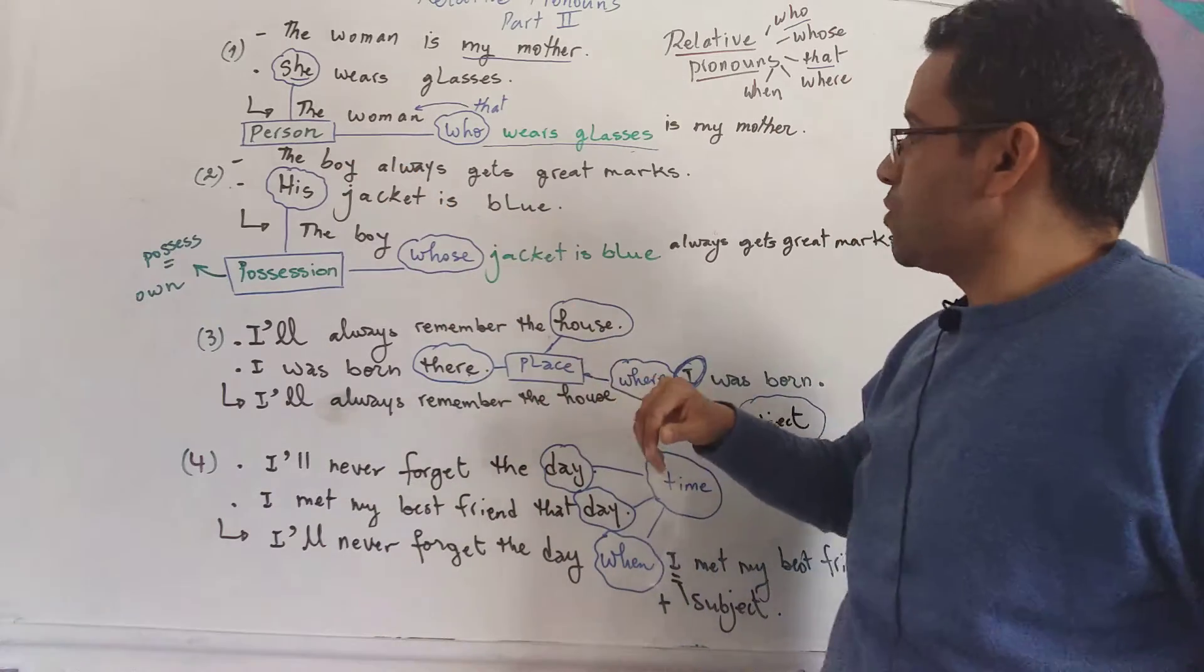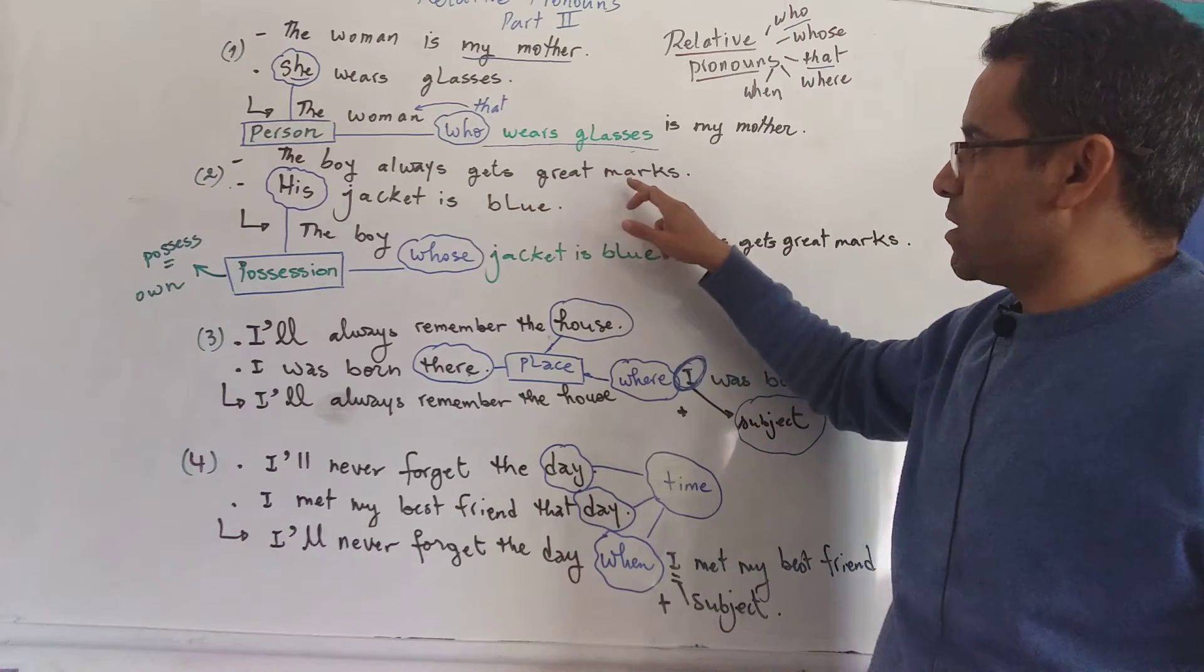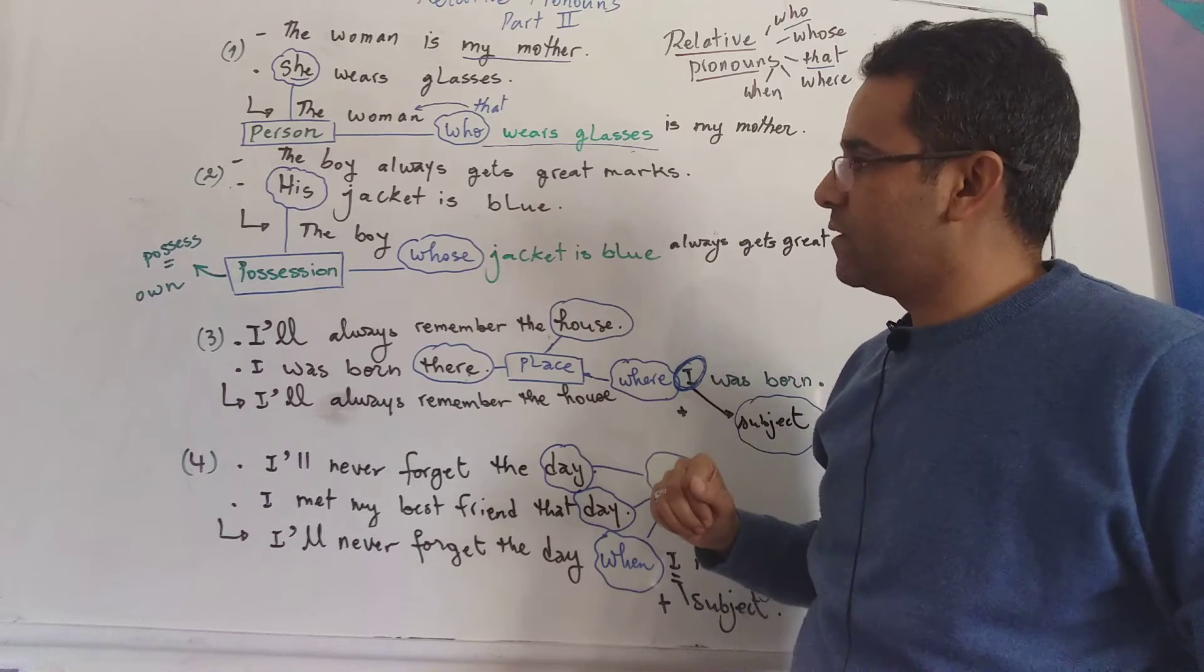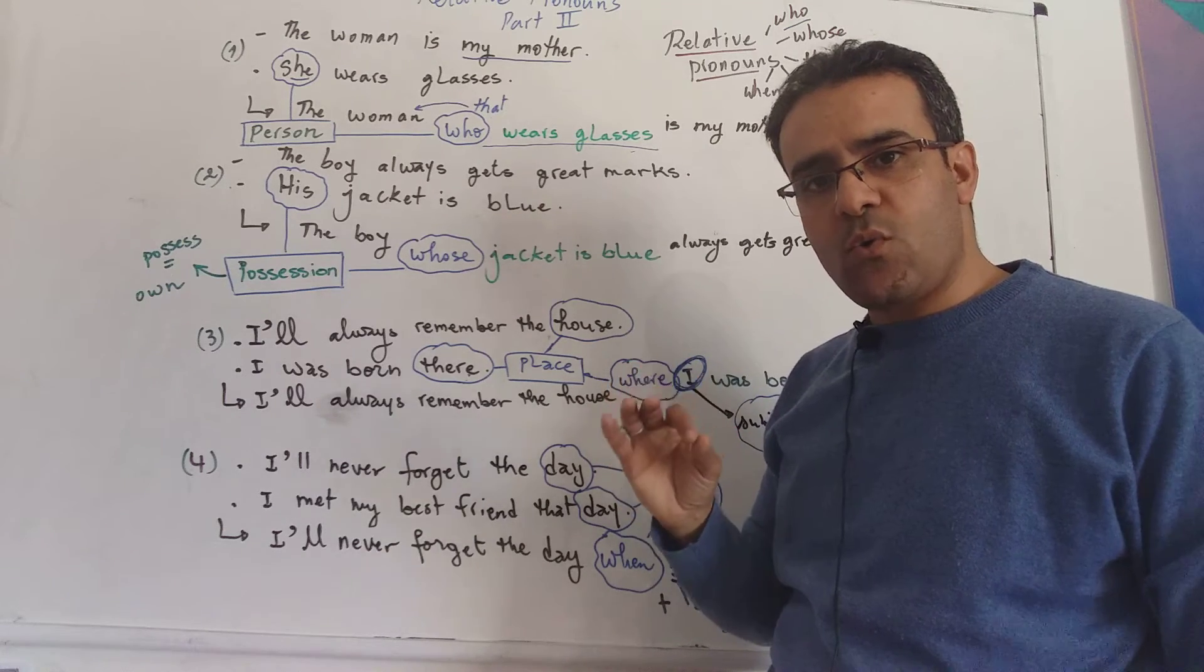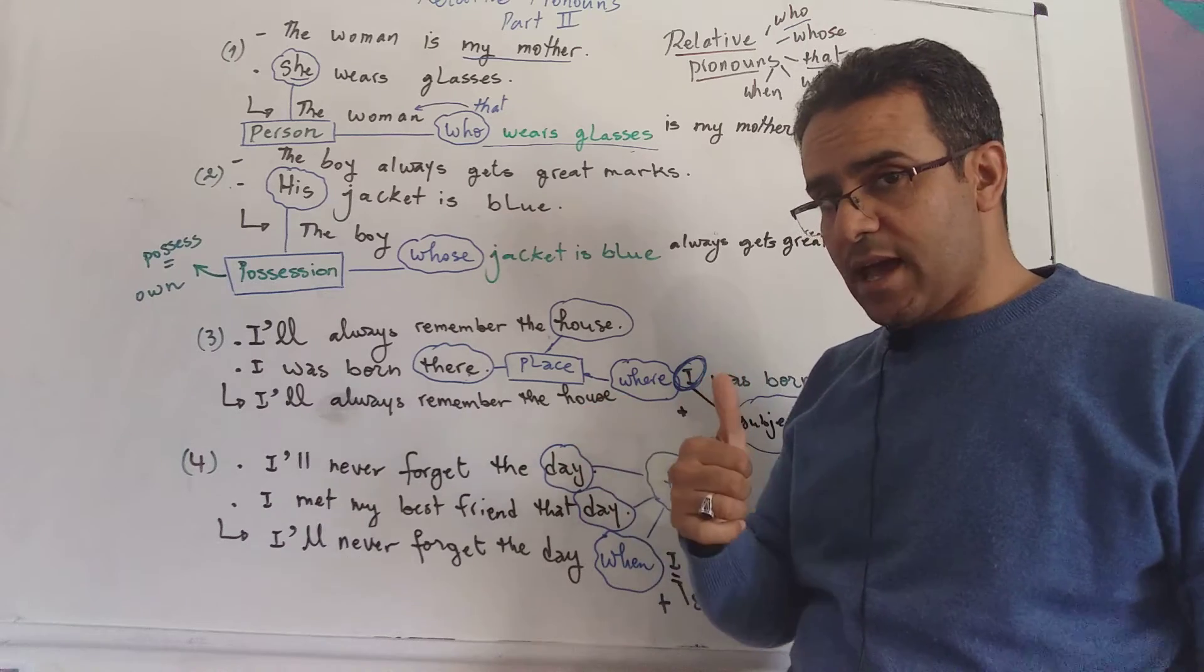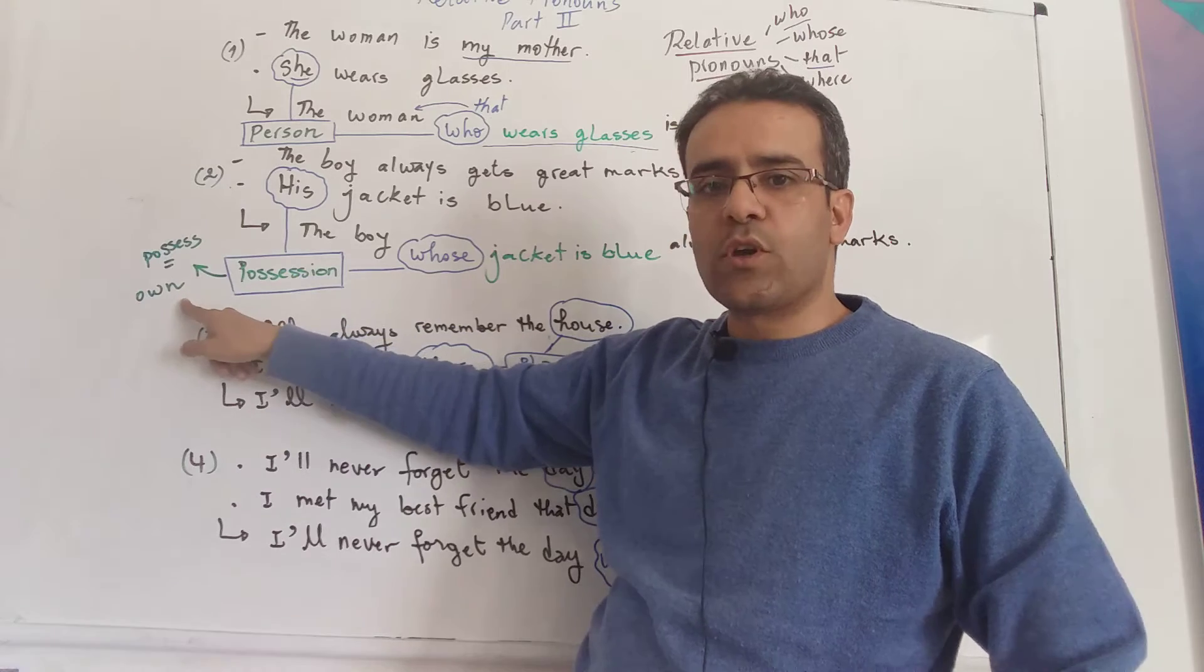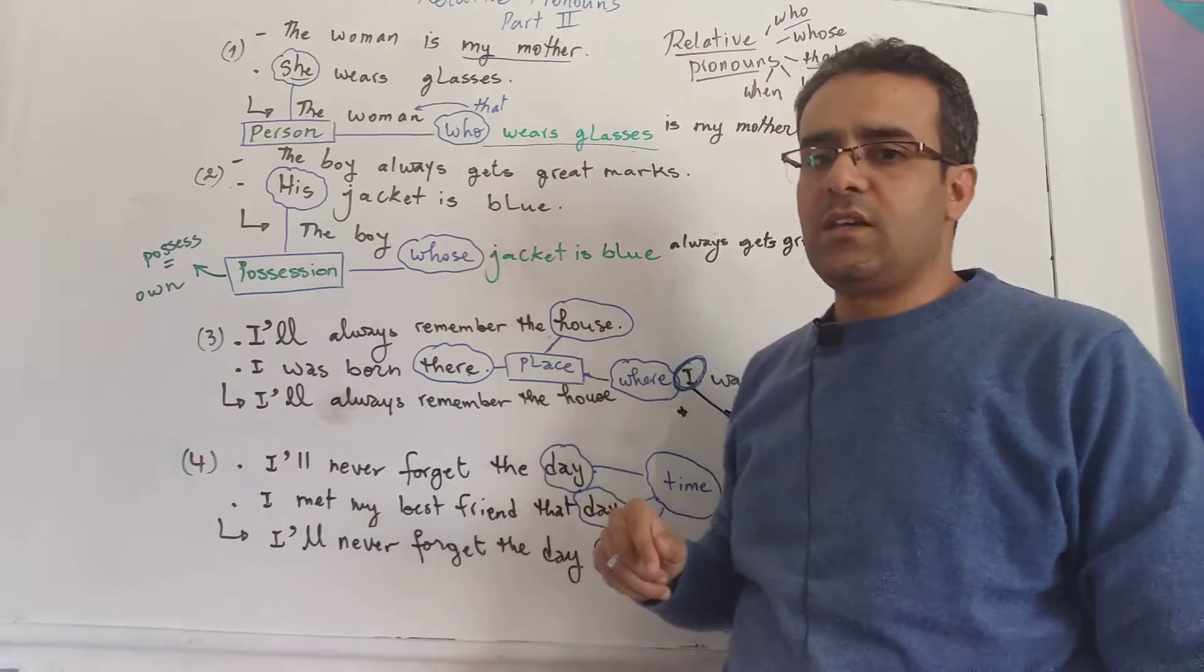Next, the second example. The boy always gets great marks. His jacket is blue. So the boy we are talking about is the boy who has, remember this, who has or who possesses, the boy who owns a jacket and that jacket is blue.